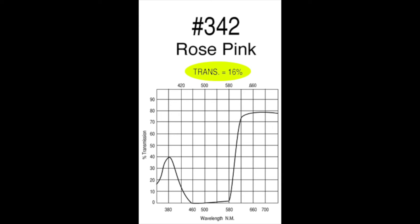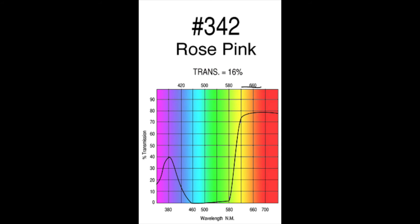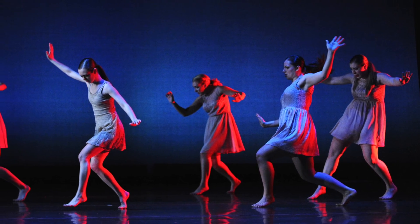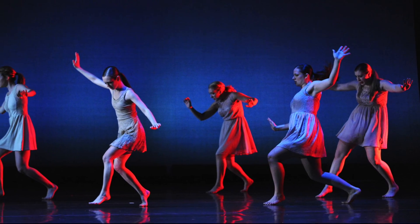In addition to basic transmission, there's also an interesting chart that is included with each swatch. This graph illustrates the visible spectrum of light and how much of each color is transmitted through the gel. The divisions from left to right break down the visible colors in the spectrum from violet to red. The peaks and valleys of the graph indicate just exactly how much of each individual hue is present in the resulting beam of light. Understanding these terms and concepts can go a long way towards helping you select the right color medium for your production.